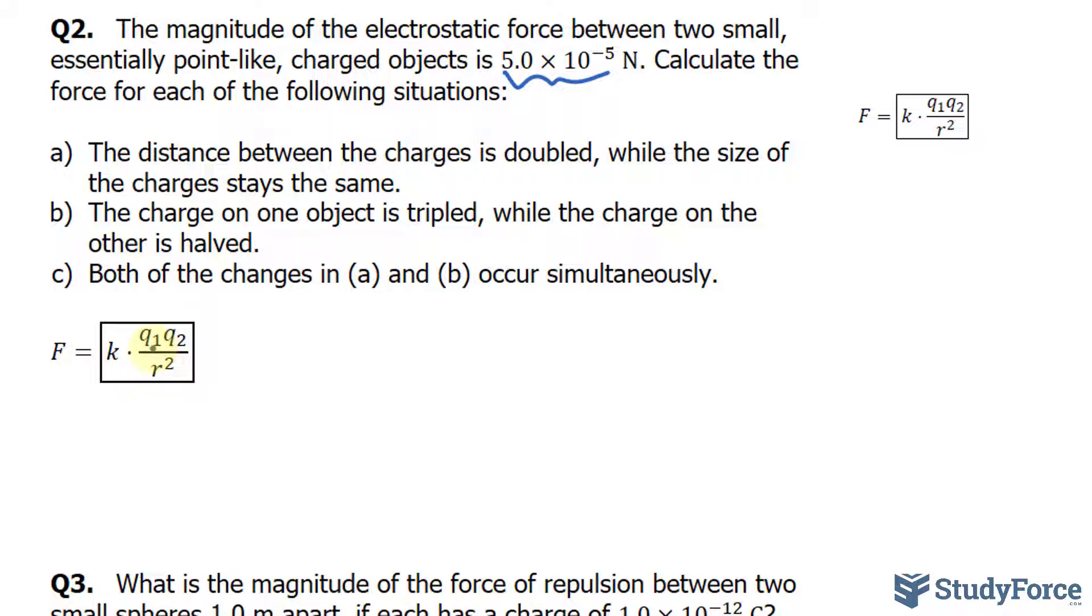The very first thing that I want to do is find out what happens when we substitute this amount in for f. So if I substitute that in for f, I end up getting 5.0 times 10 to the power of negative 5 newtons is equal to k times q sub 1 times q sub 2 over r to the power of 2.